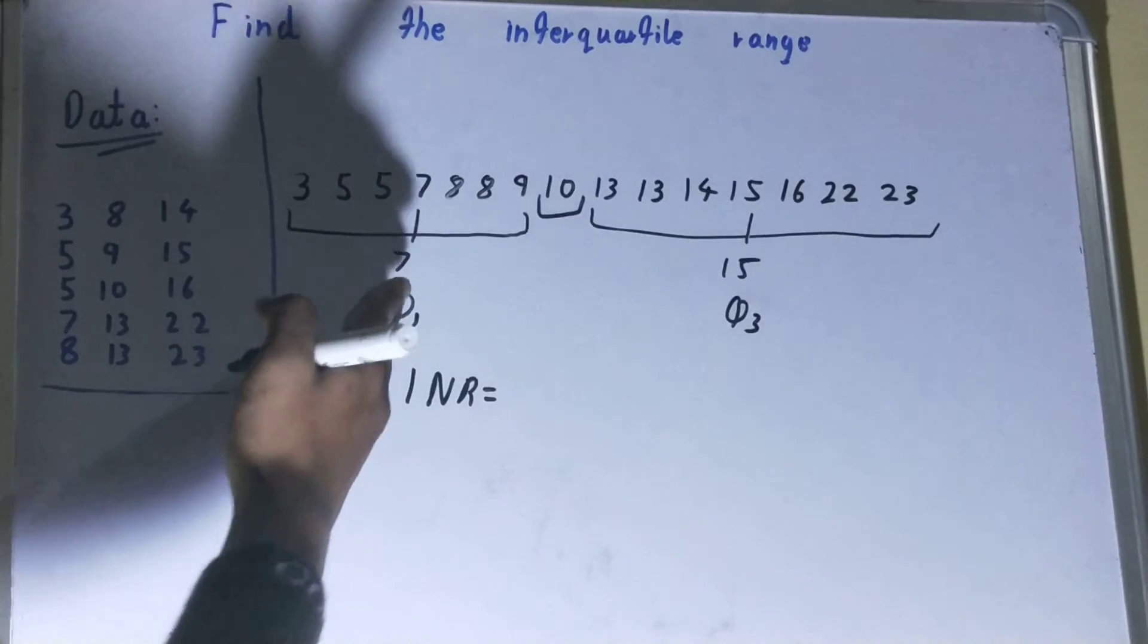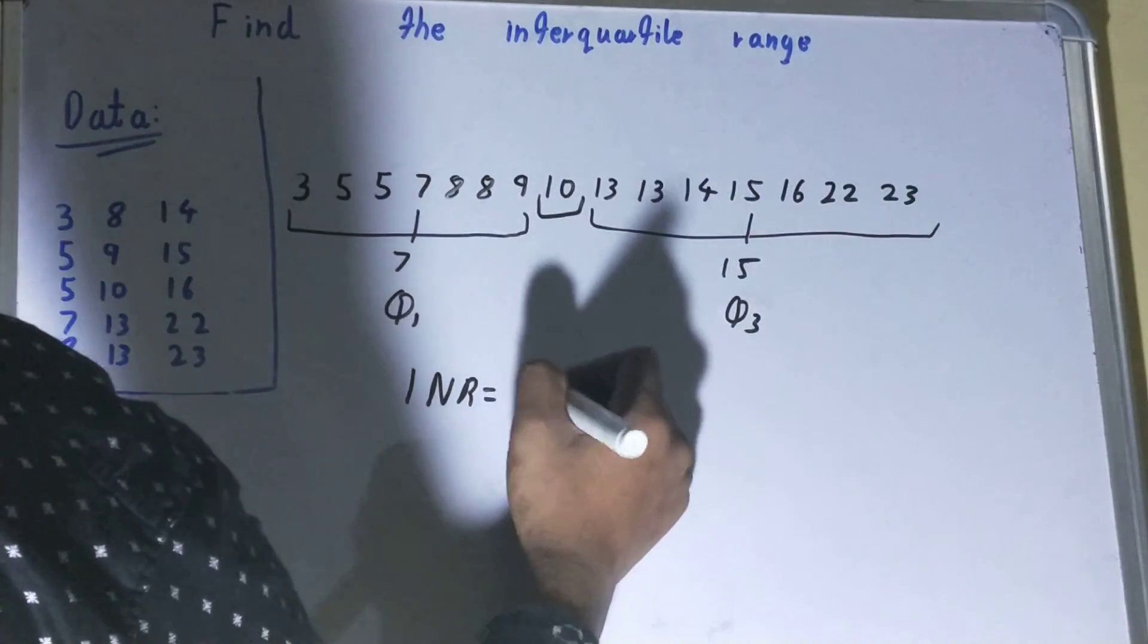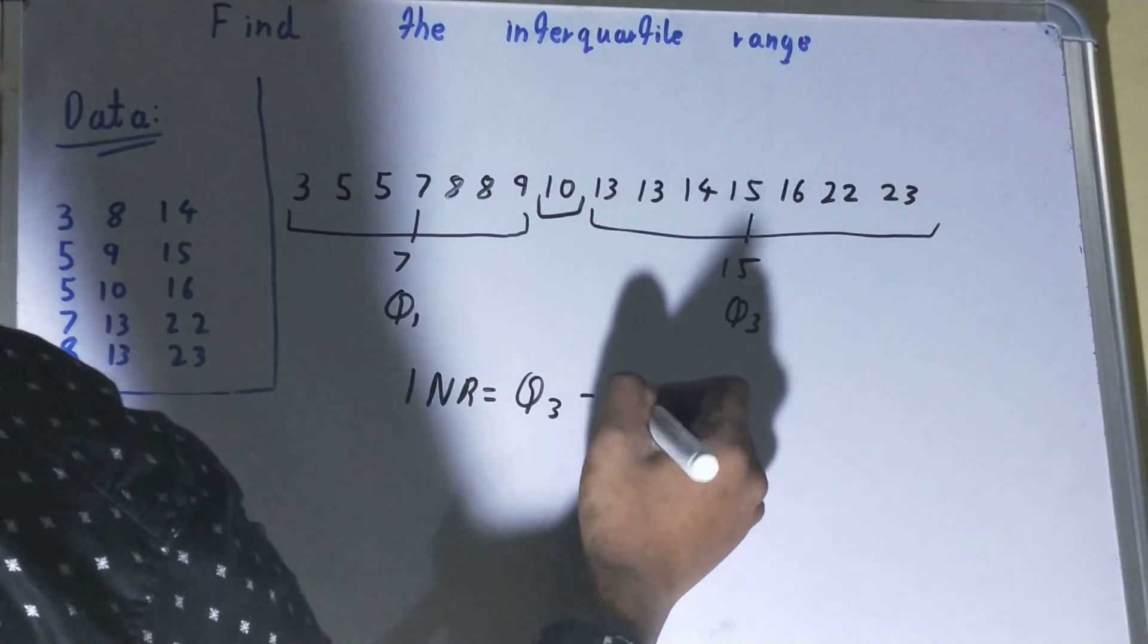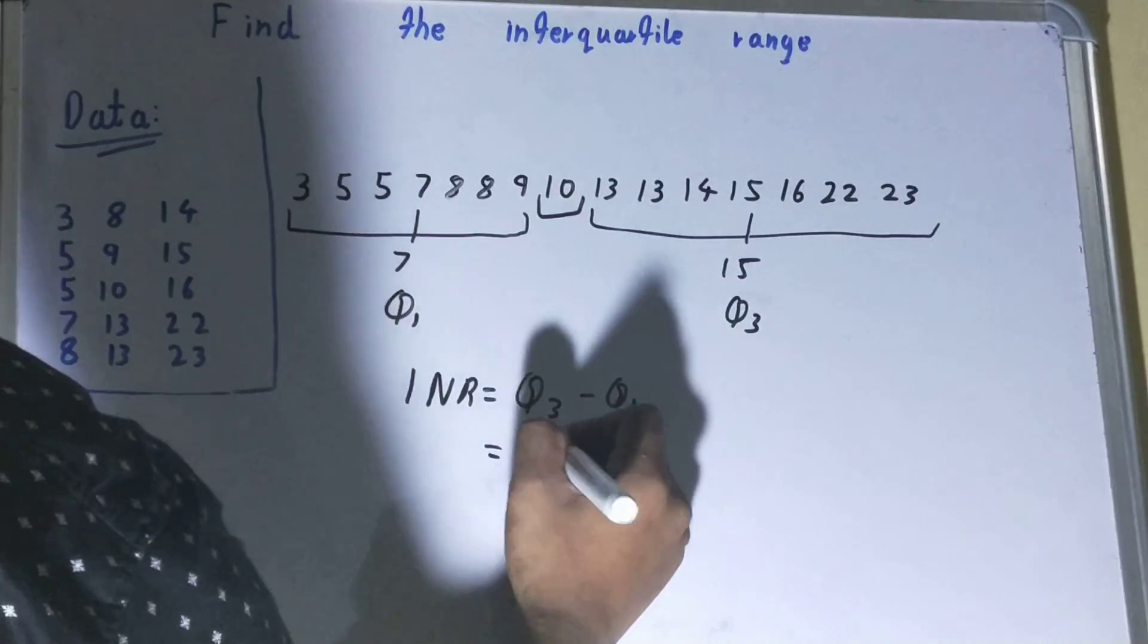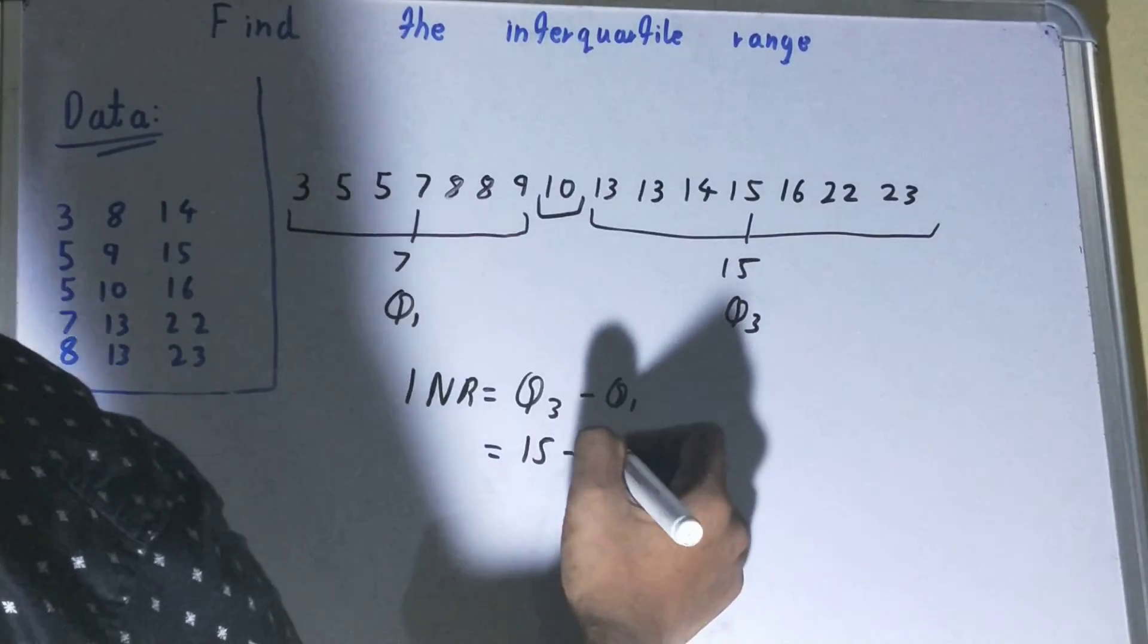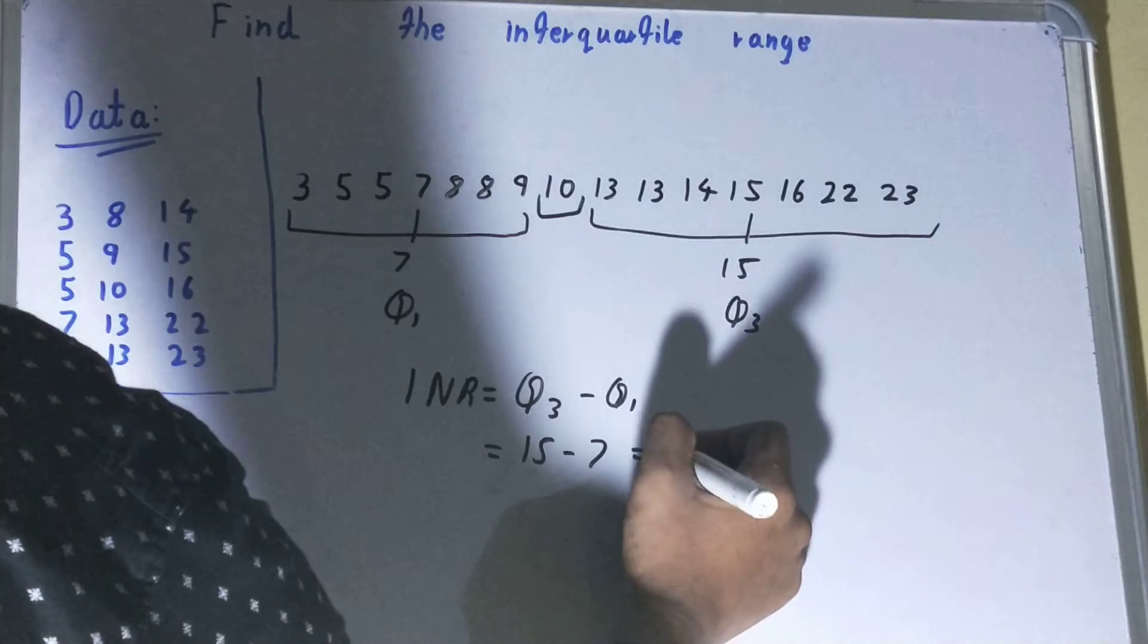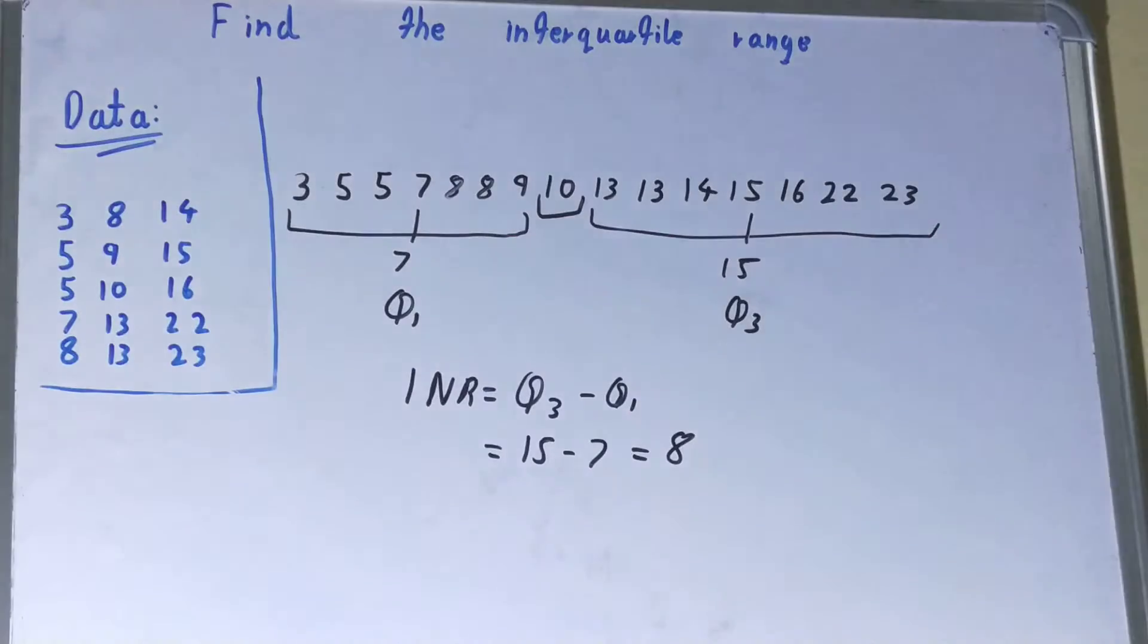So your Q3 is 15 and your Q1 is 7, so your answer will be 8. So 8 is our interquartile range. This was all about how you can find it.